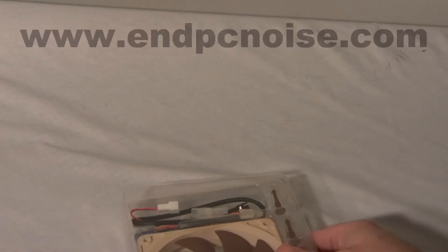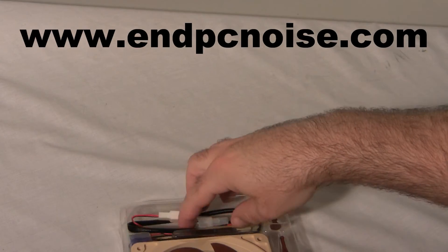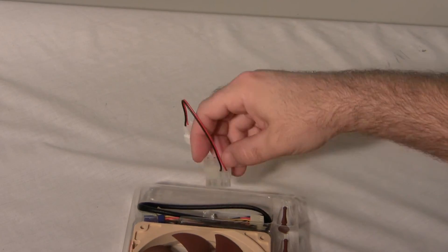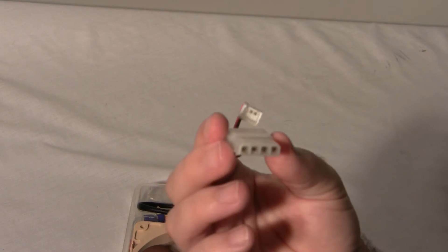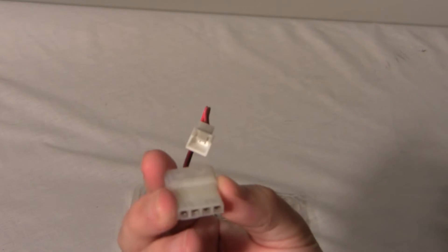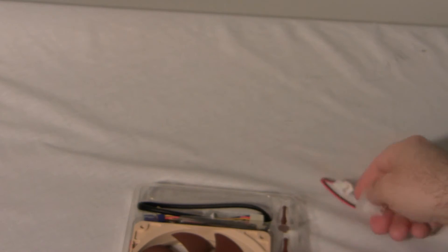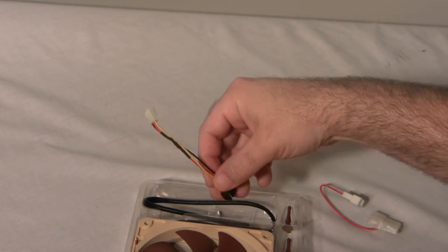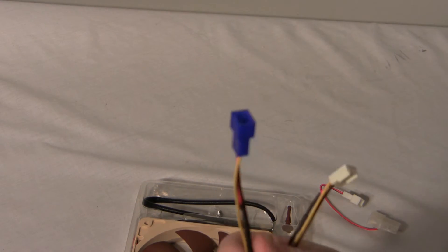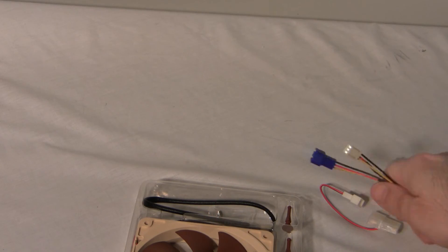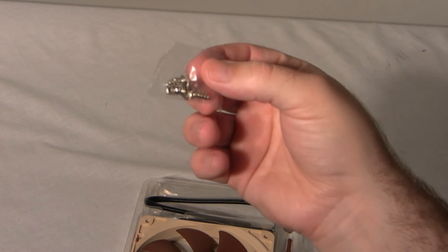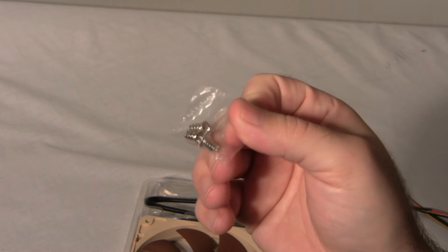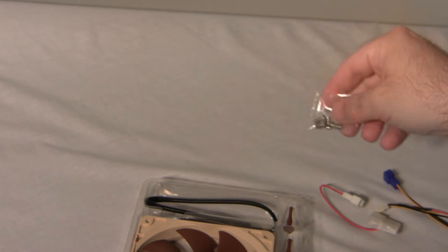Let's open this up and have a look at the fan. We get a 4-pin pass-through molex to 3-pin power adapter, the low noise adapter with the black on the end, and the ultra low noise adapter with the blue on the end.